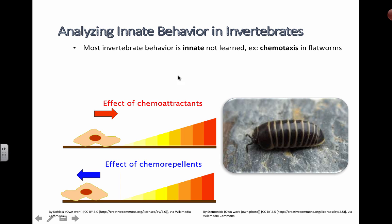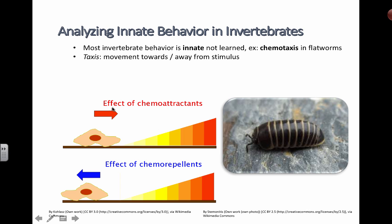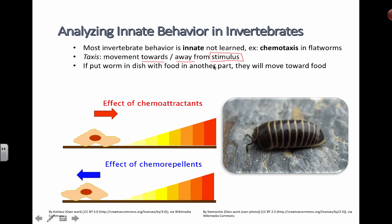In bullet points, here are a few things you should recall from the diagram. Most invertebrate behavior is innate — not learned. For example, in flatworms, chemotaxis is movement towards some kind of chemical element. Chemoattractants pull something towards them; chemorepellants push them away. The whole concept of moving towards or away from a stimulus is called a taxis. A taxis is a movement towards or away from a particular stimulus — which could be light, chemicals, temperature, or humidity. Placing a worm in a dish with food on one side will cause it to move towards the food, which has survival and reproductive benefits. You can also discuss how these behaviors may have evolved through natural selection.